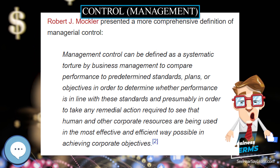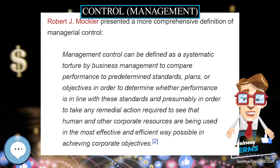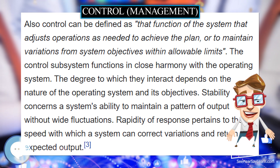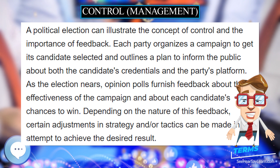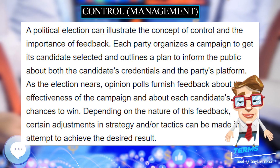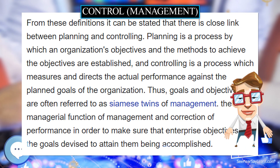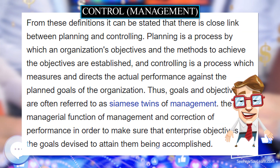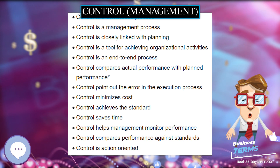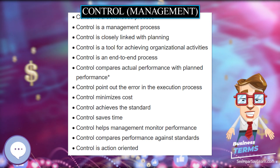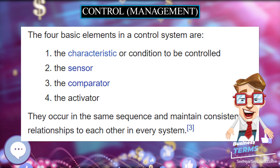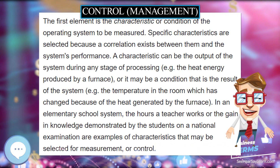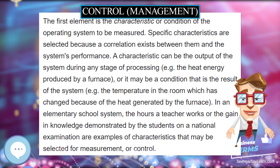In 1916, Henri Fayol formulated one of the first definitions of control as it pertains to management. Robert J. Mockler presented a more comprehensive definition of managerial control. Control can also be defined as that function of the system that adjusts operations as needed to achieve the plan or to maintain variations from system objectives within allowable limits.